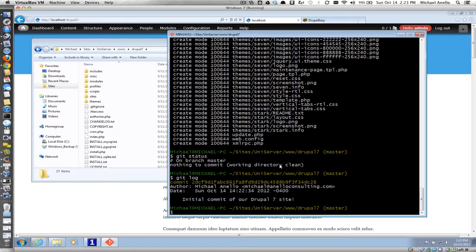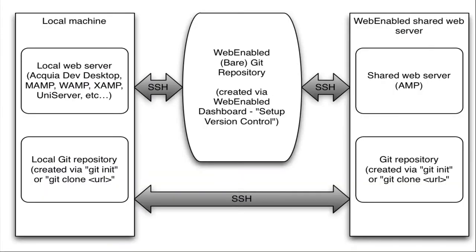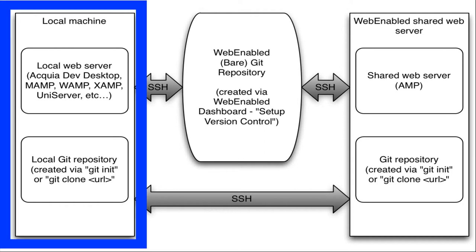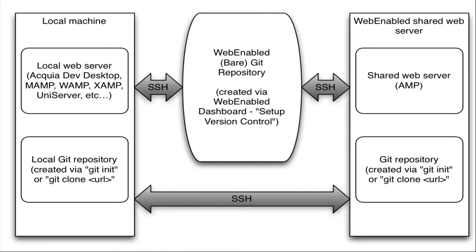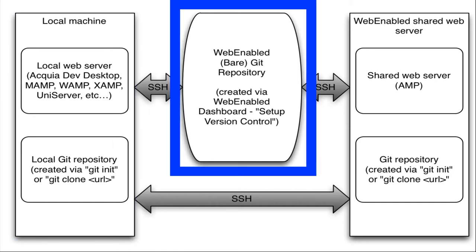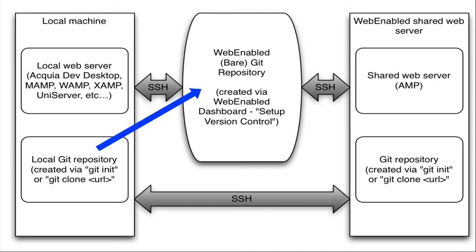We now have a local repository on our local site. I have an image to help illustrate this. This is our local machine — we have a local web server using Uniserver, and I've just created a local Git repository. The next step is to set up a bare repository on web-enabled, and then push our local commits up to that bare repository via SSH.